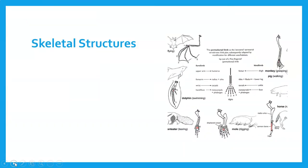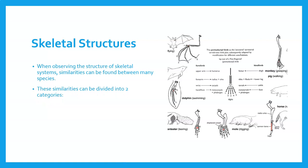As we start looking at this whole concept of speciation, we need to have an understanding of some differences in skeletal structures and the importance they play in understanding evolution. When we observe the structure of skeletal systems, similarities can be found between many species. We can separate these similarities into two categories: homologous structures and analogous structures.